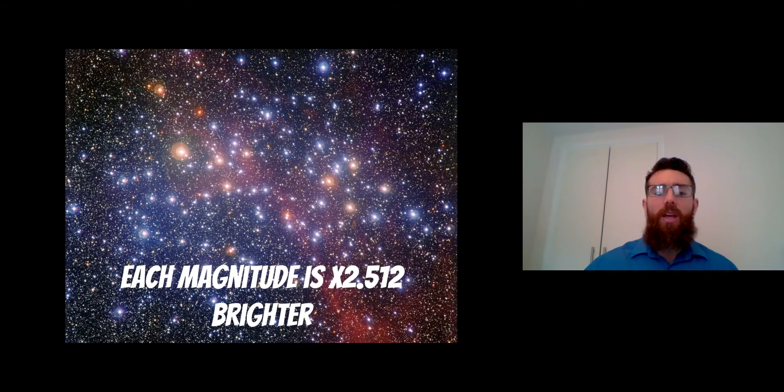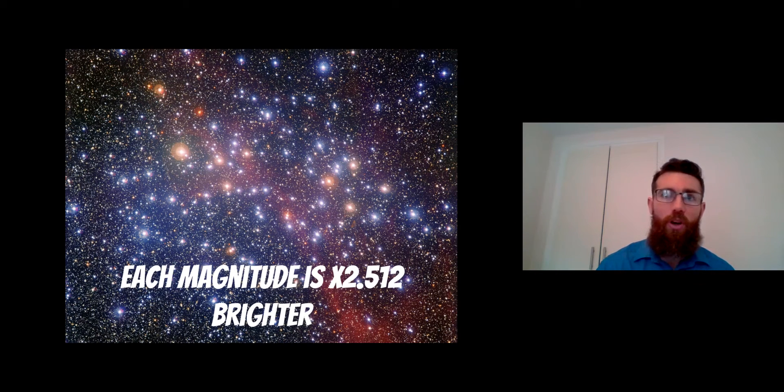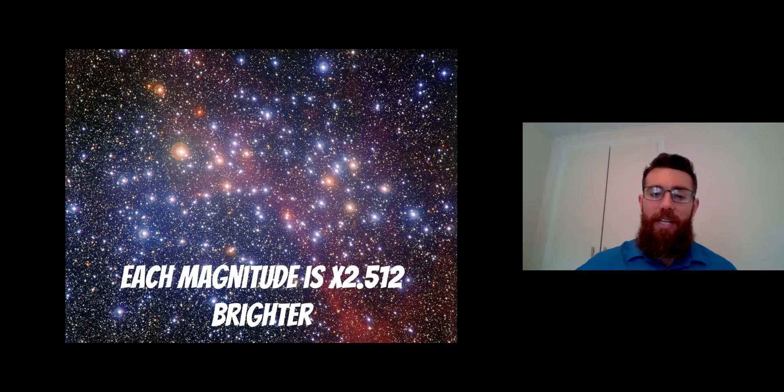Each magnitude difference on this system is 2.512 times brighter. So if a star had a magnitude one difference, it could be 2.512 times brighter or dimmer. It's a logarithmic scale, so each time you've got one magnitude, it changes by this amount. That's worth noting.